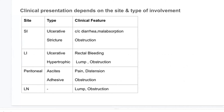In the large intestine, ulcerative lesions usually present with rectal bleeding; sometimes massive bleeding can occur. Hypertrophic lesions usually present with abdominal mass or features of intestinal obstruction. For peritoneal involvement, the usual presentation is ascites with abdominal distension and vague abdominal pain. The adhesive form usually presents with obstruction due to fibrotic bands and pressure effect on the intestinal loops.